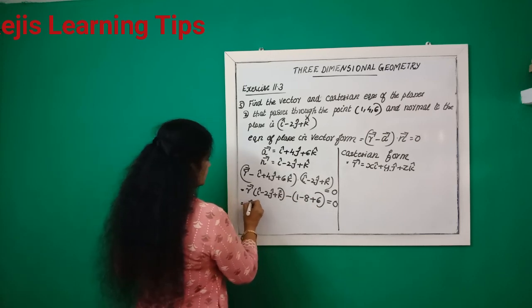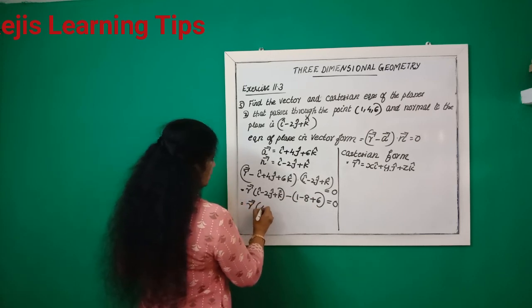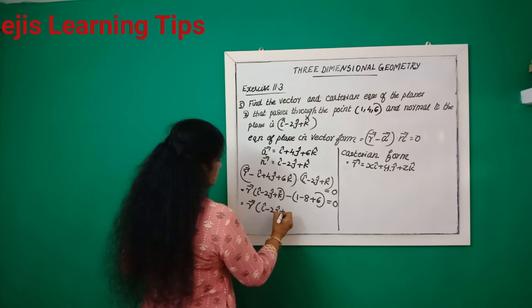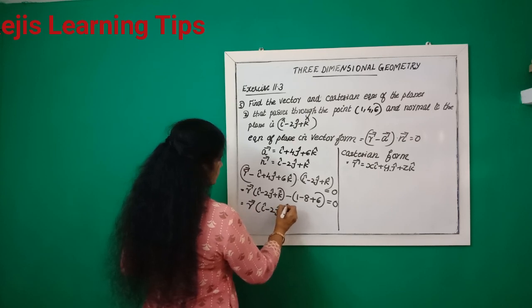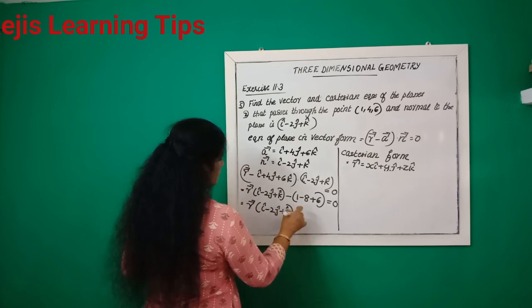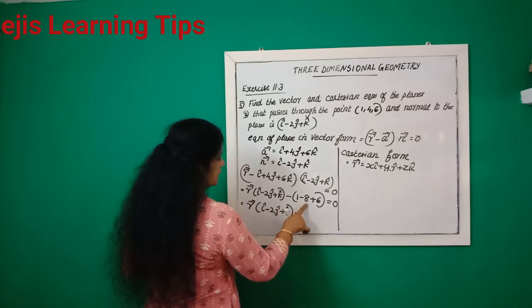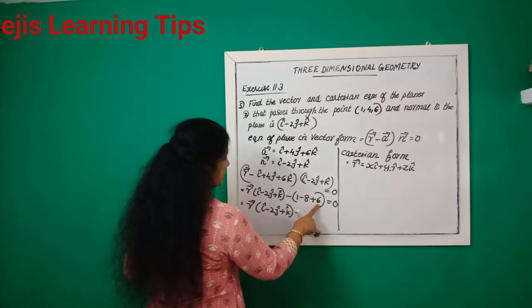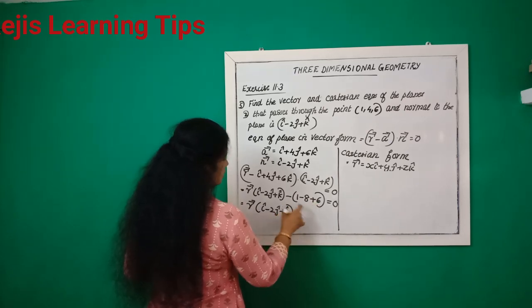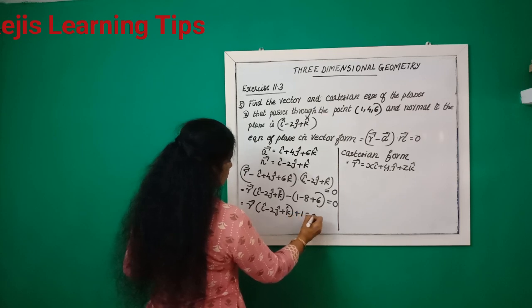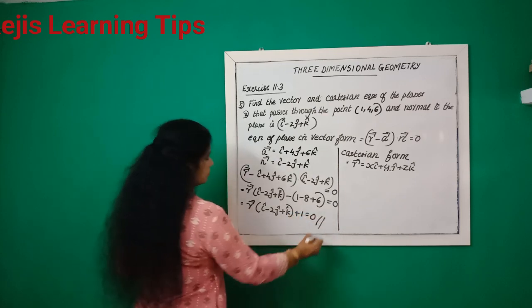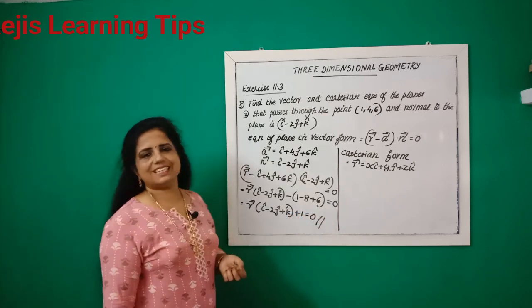So: r vector dot (i minus 2j plus k) minus (1 minus 8 plus 6) equals zero. That is 1 minus 8 is minus 7, minus 7 plus 6 is minus 1, so plus 1 equals zero. This is the vector form.